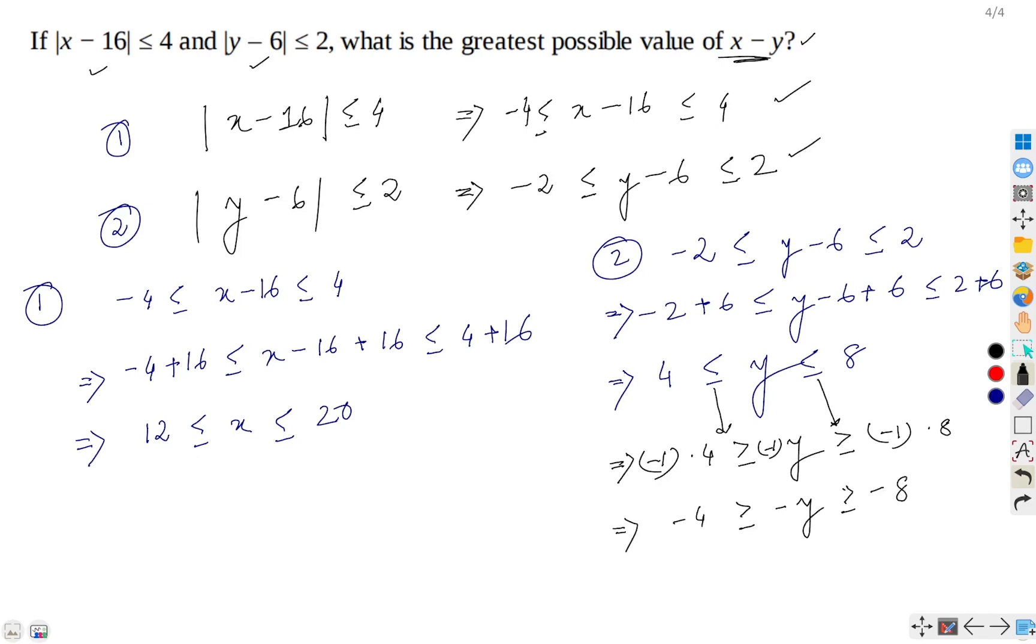Now, what we are going to do, we will add these two. So, if we add, let us just rewrite this in this form first, so we have -8 ≤ -y ≤ -4.